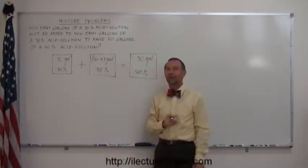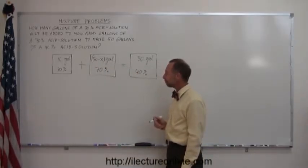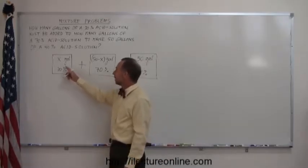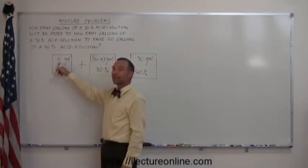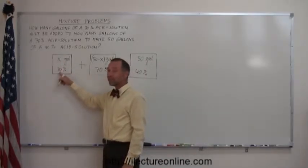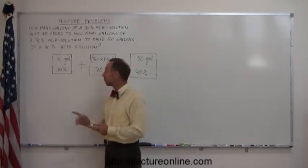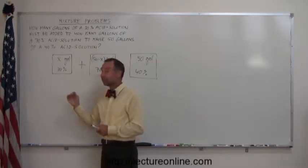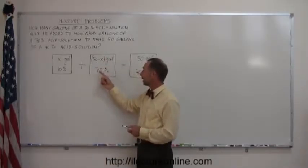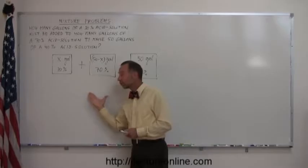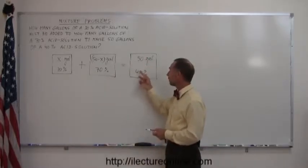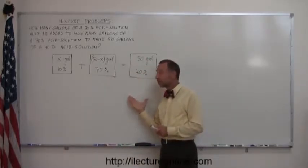And now you're ready to start solving the problem. The product of the amount of gallons that you have with the percentage of acid that you have in the solution, that gives you the total amount of acid. So, if I multiply these together, I get the amount of acid I have in this solution. If I multiply these two together, I have the amount of acid I have in this solution. And if I multiply these two together, I have the amount of acid I have in this solution.